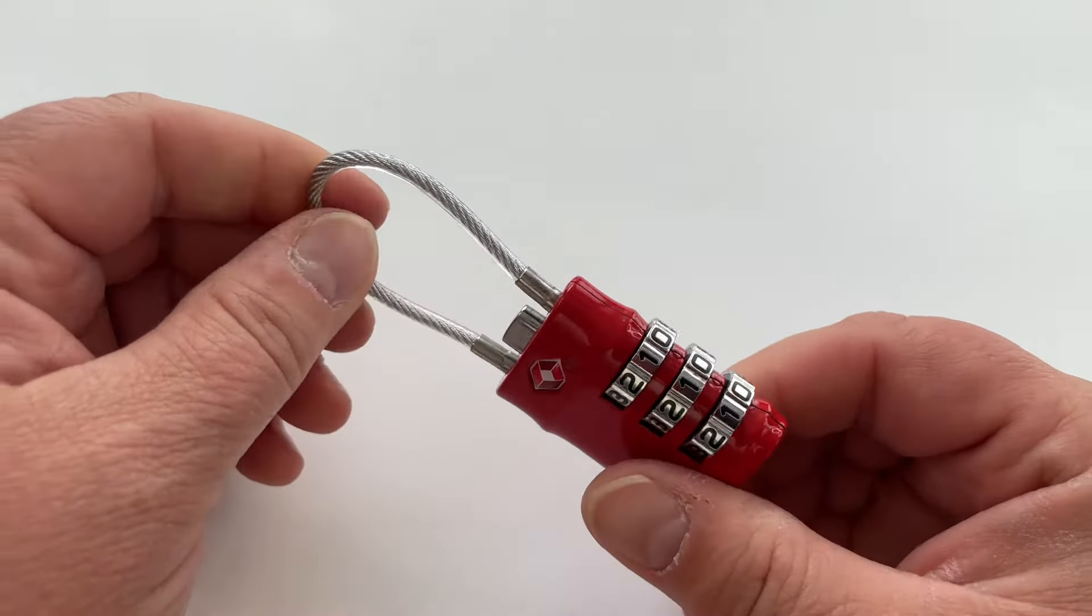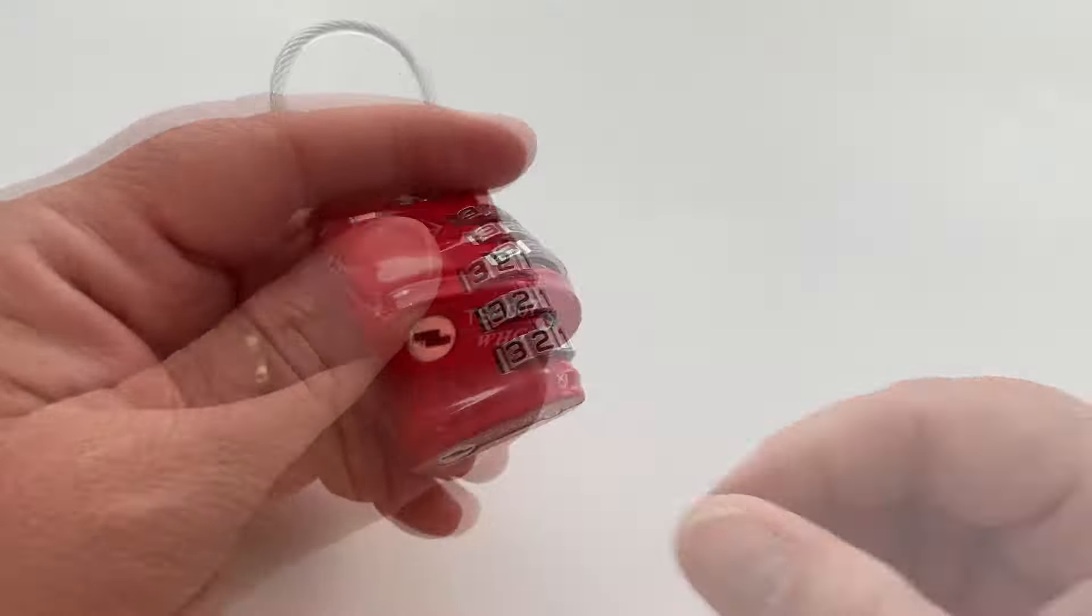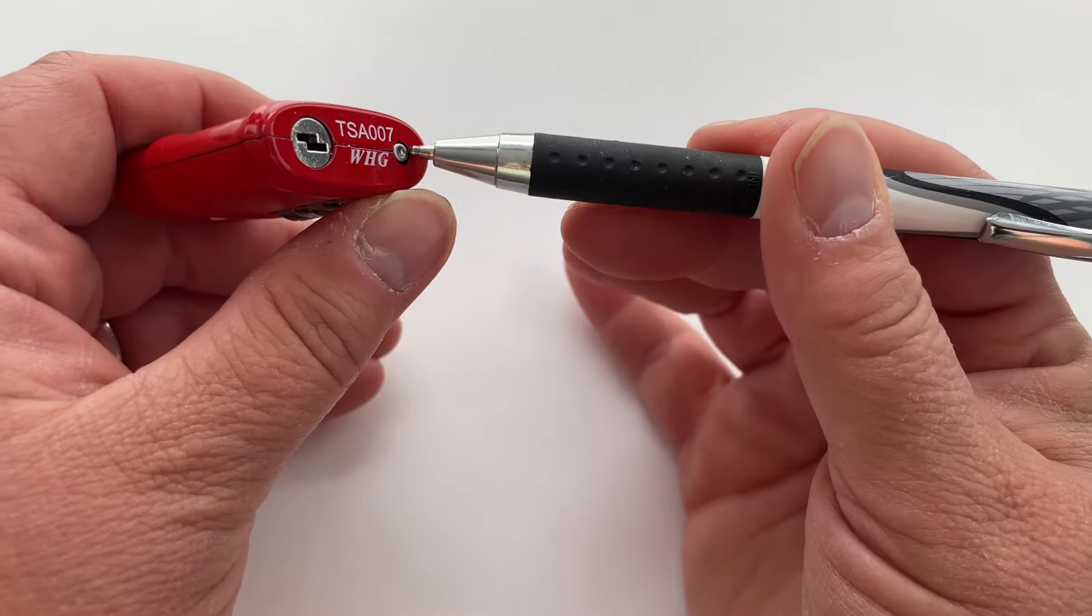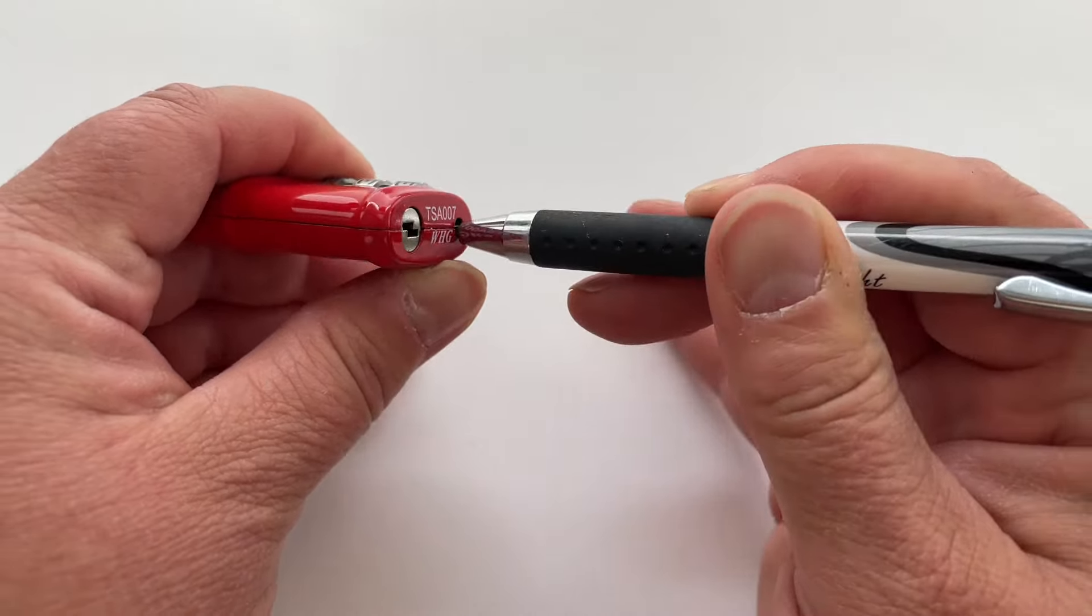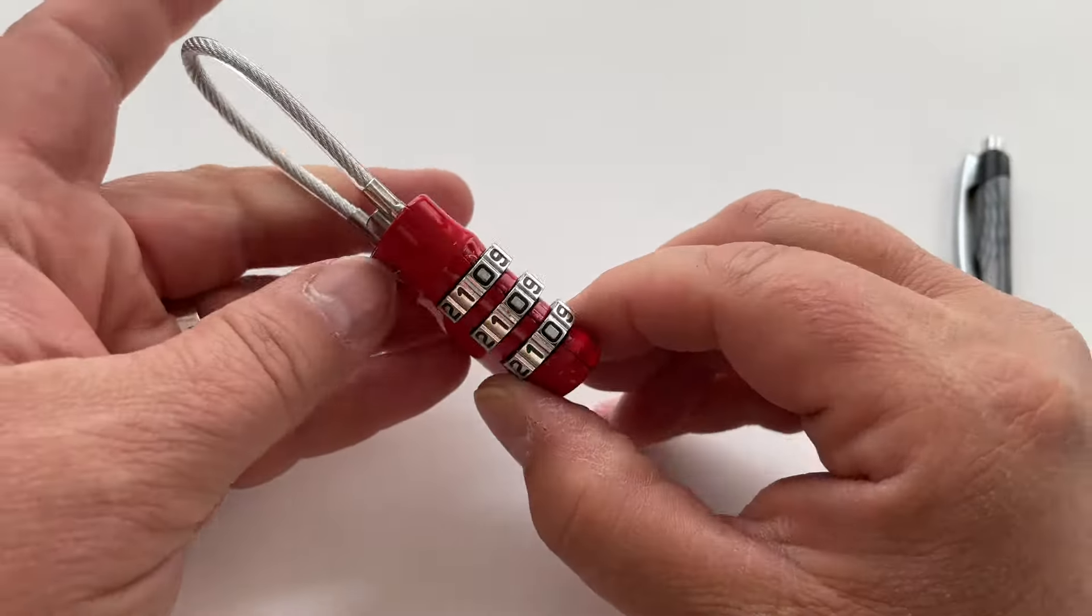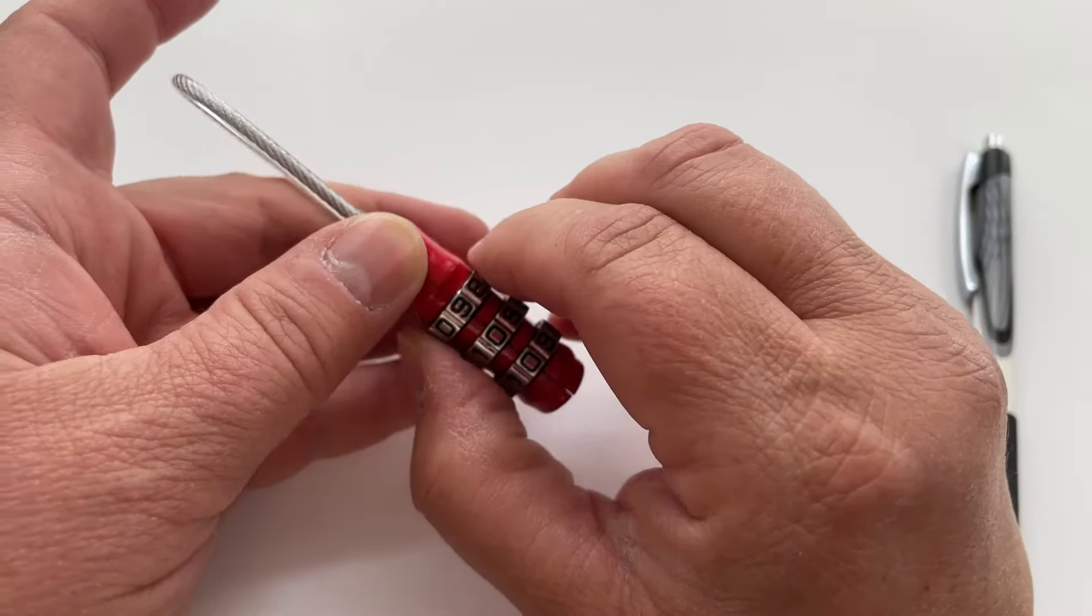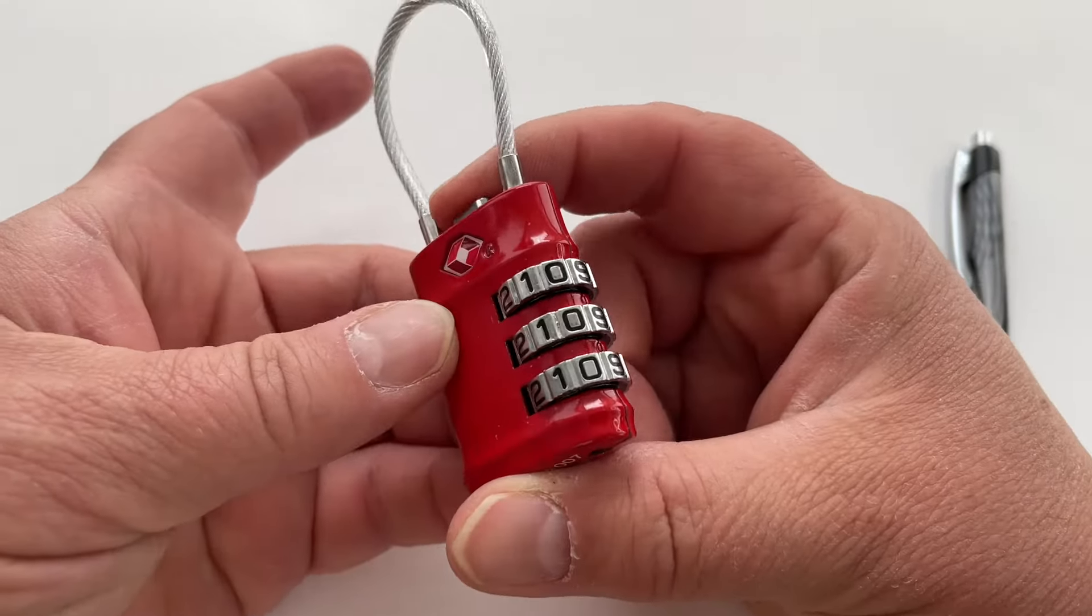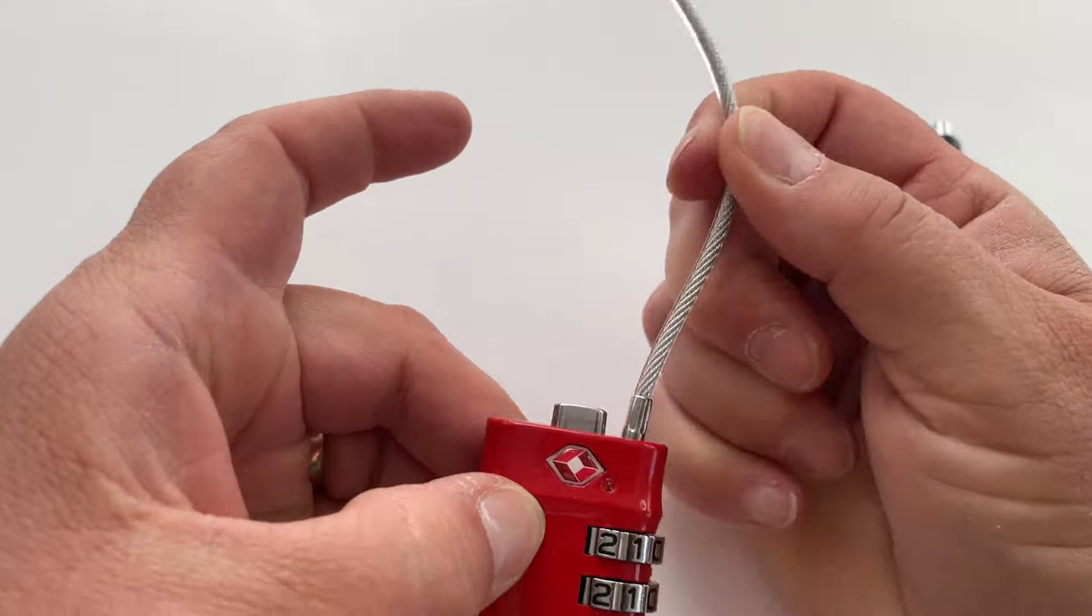You'll need a sharp object like a pen. What you're going to do is press this little button, and when the button is pressed in, you're going to change your combination. I'm going to change it to nine nine nine, and the lock opens.